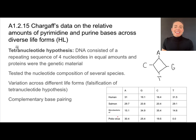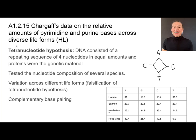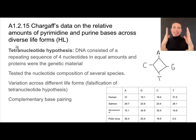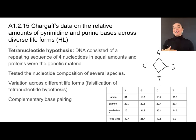An interesting note: the polio virus doesn't have any T's. That's because the polio virus uses RNA as its nucleic acid or genetic material, so it would have uracil instead of thymine. This is a great example of unity and diversity: all living things have equal amounts of purines and pyrimidines — A equals T and G equals C — but we find diversity in the relative amounts of those bases between species.